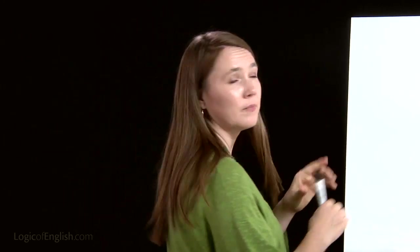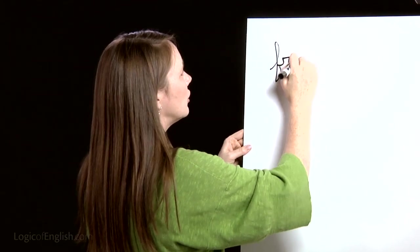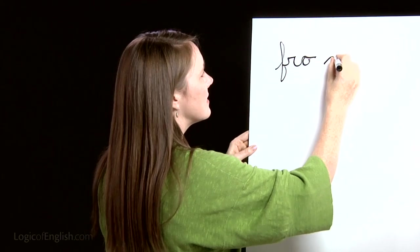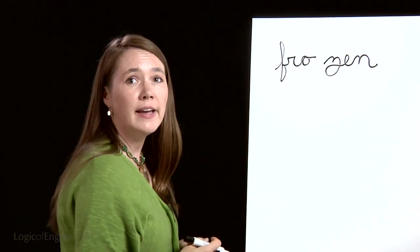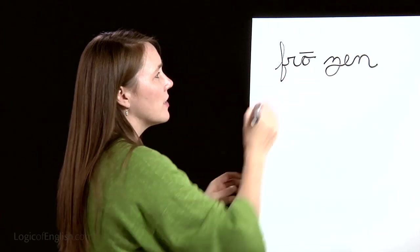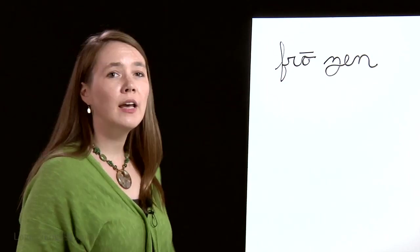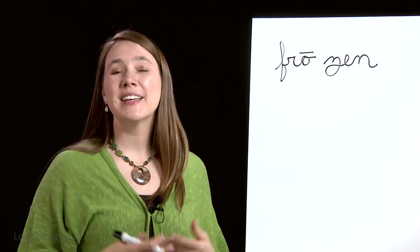The first word is 'frozen.' Ice is frozen water. How many syllables in 'fro-zen'? Two. The first syllable is 'fro,' F-R-O. The second syllable is 'zen,' Z-E-N. Go ahead and write it. F-R-O, second syllable is 'zen,' Z-E-N. And how will we mark it? We'll put a line over the O to show it's saying its long sound. And why did the O say 'O' in 'frozen'? Because it's at the end of the syllable.